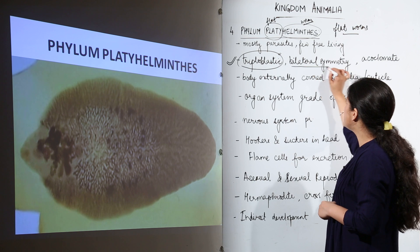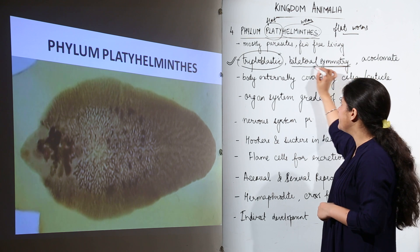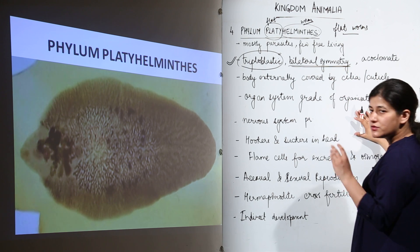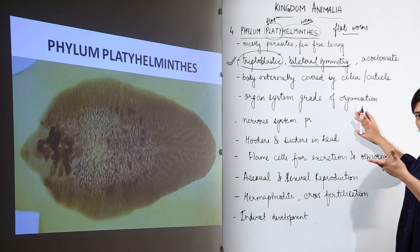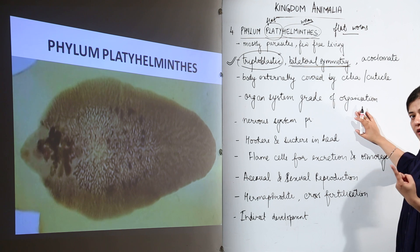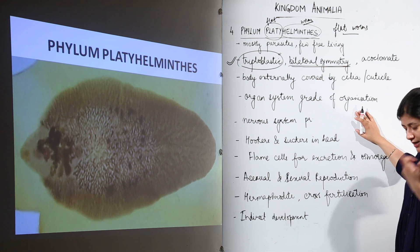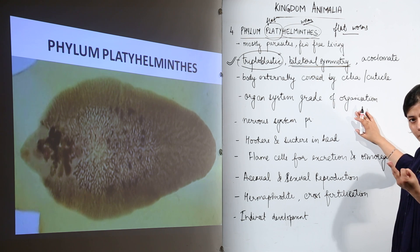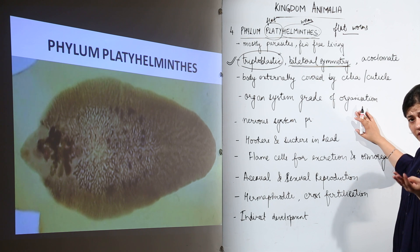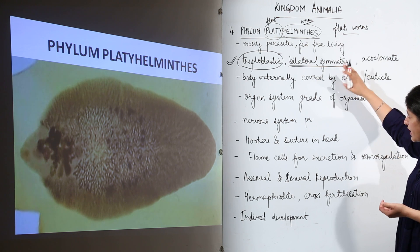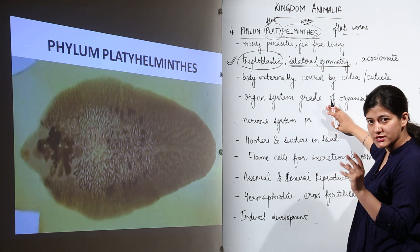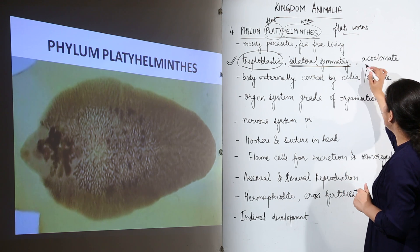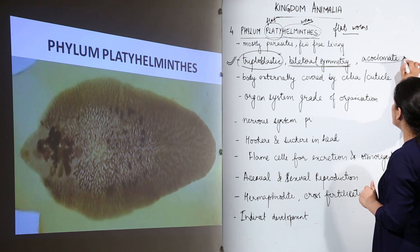It is bilaterally symmetrical. From here onwards we are going to see organisms which are bilaterally symmetrical. Recall that the first phylum was asymmetrical, the second and third were radially symmetrical, and from now onwards we are going to find bilaterally symmetrical organisms. They are also acoelomate.